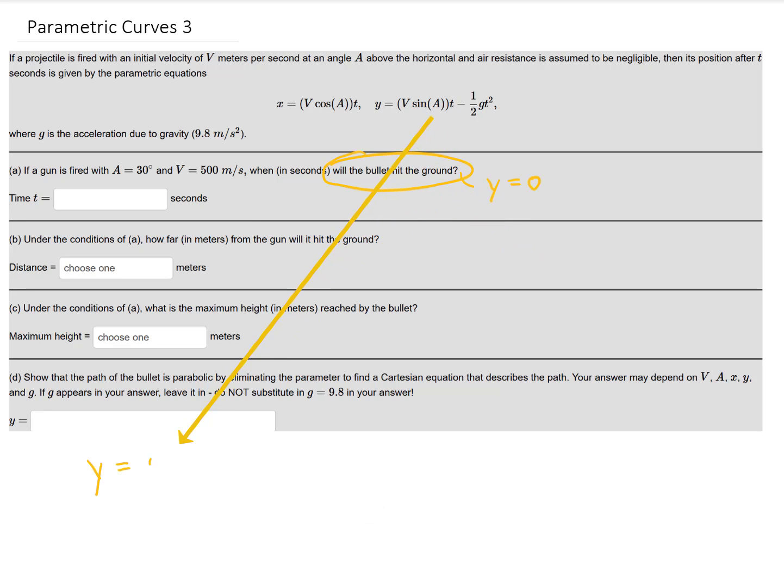So I'm going to plug in v equals 500 and a equals 30. We're going to go with g equals 9.8 and again we're going to determine when this y value here equals 0. Let's simplify. Sine of 30 degrees is 1 half so this turns into 250t minus 4.9t squared.